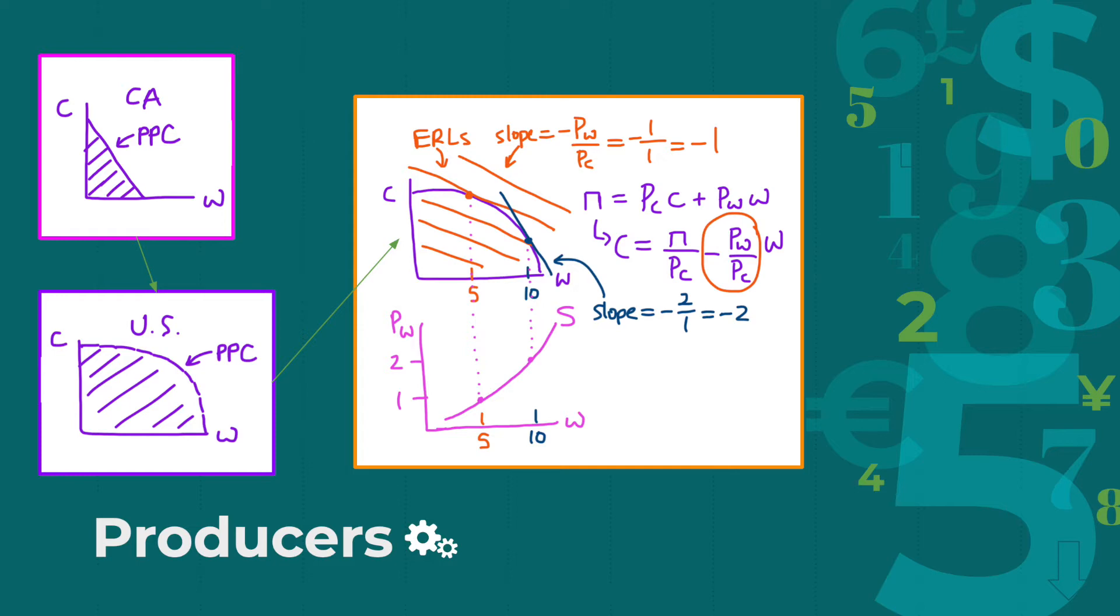Now that we've considered output, we can also consider profit. The amount of profit the U.S. makes can be represented by the equation profit π equals the price of corn times the amount of corn produced, plus the price of wheat times the amount of wheat produced.